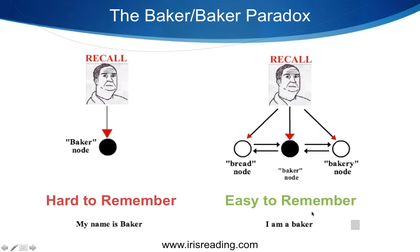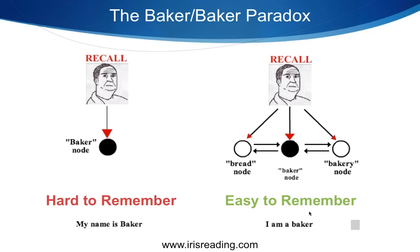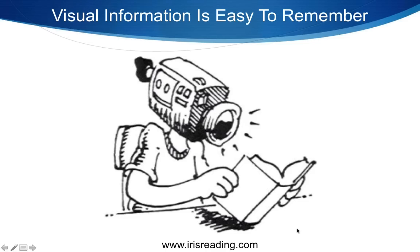That's why they call it the Baker-Baker Paradox — in one situation it's hard to remember 'my name is Mr. Baker,' but in another it's easy to remember 'I am a baker.' The reason is that human beings remember visual information very easily. When you think of a baker, you picture bread, cake, a baker's hat, flour on the hands — you have visual references.